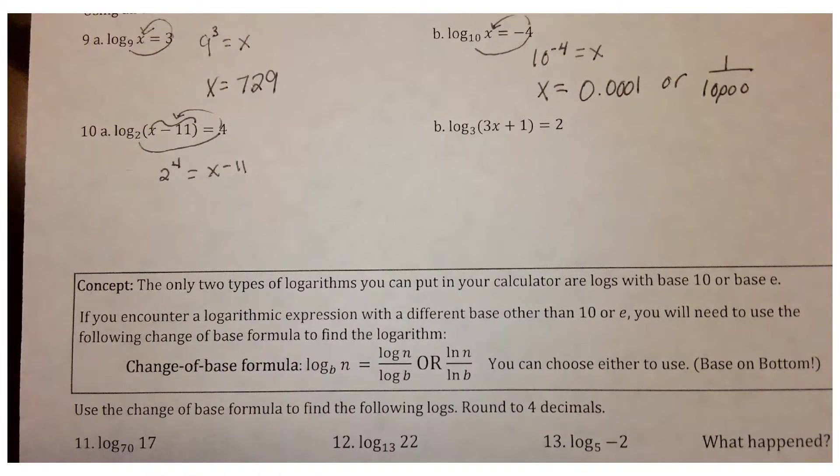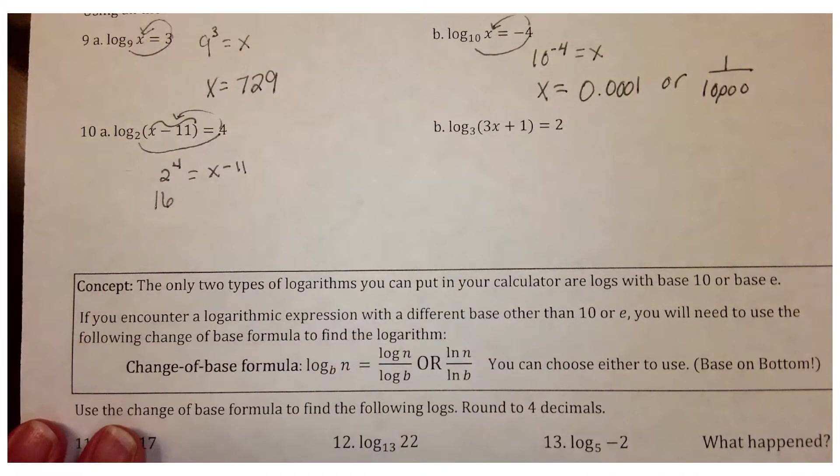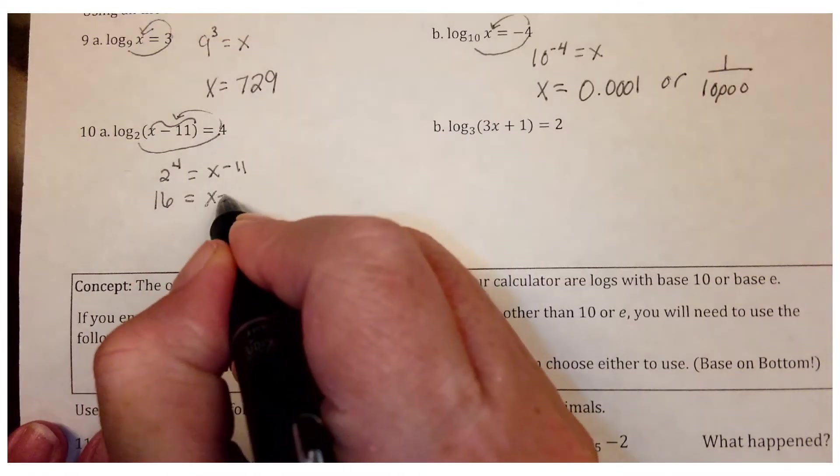So let's simplify 2 to the 4th. 2 to the 4th would be 16. Because 2 times 2 is 4 times 2 is 8 times 2 is 16 equals x minus 11.